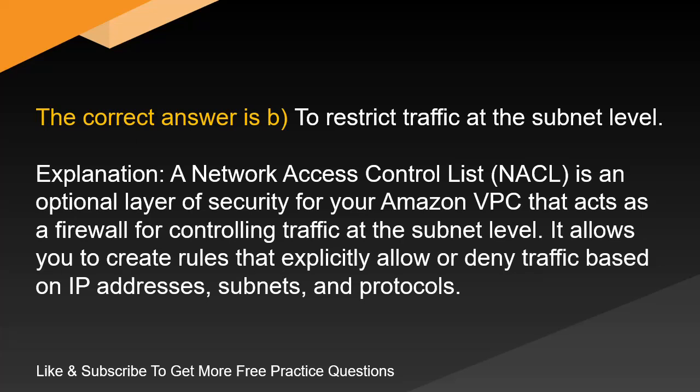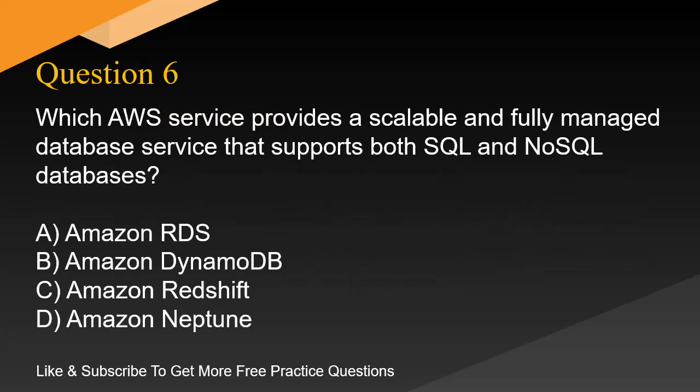Explanation. A Network Access Control List, NACL, is an optional layer of security for your Amazon VPC that acts as a firewall for controlling traffic at the subnet level. It allows you to create rules that explicitly allow or deny traffic based on IP addresses, subnets, and protocols.